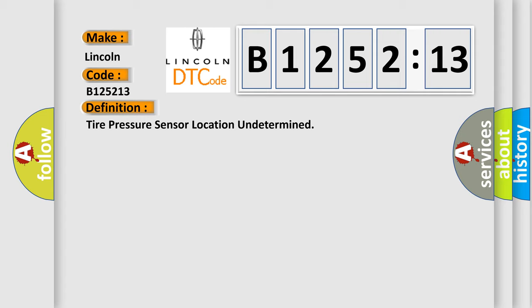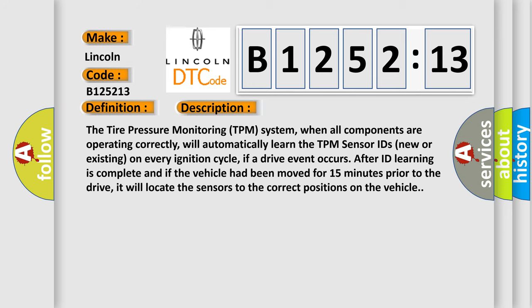The basic definition is: Tire pressure sensor location undetermined. And now this is a short description of this DTC code.